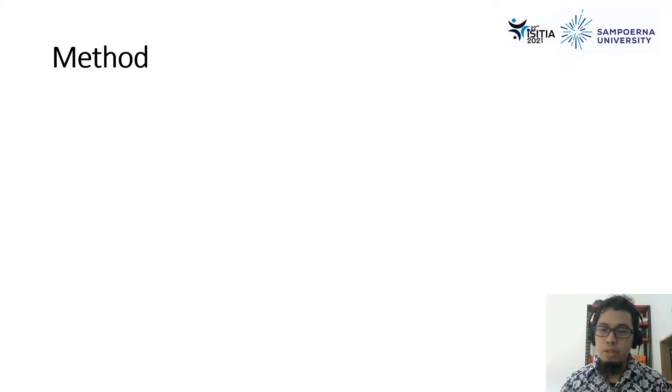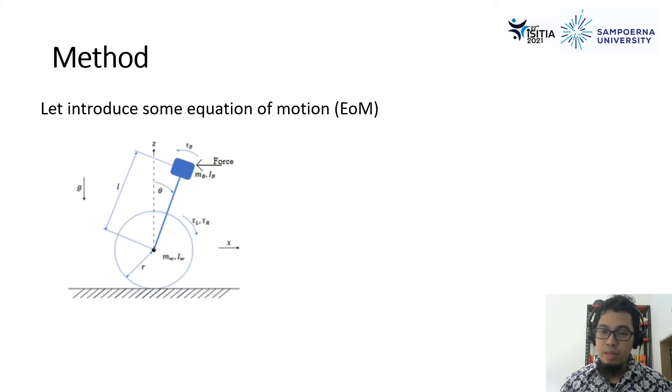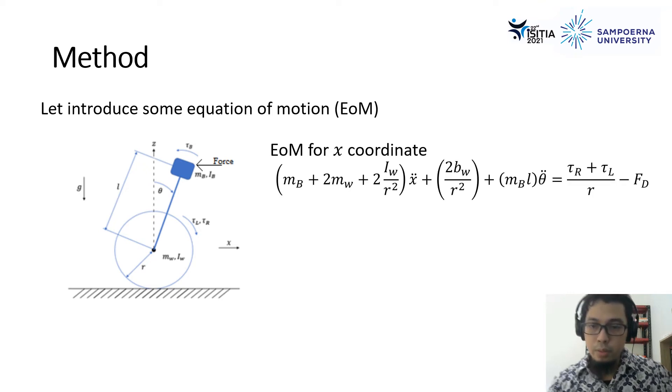Now, as we already introduced the H-infinity theorem and remarks, we move to our main equation of motions for our two-wheeled mobile robot model, which represent by this figure, where for the equation of motion, we have to consider the x-coordinate, which represent by these equations.